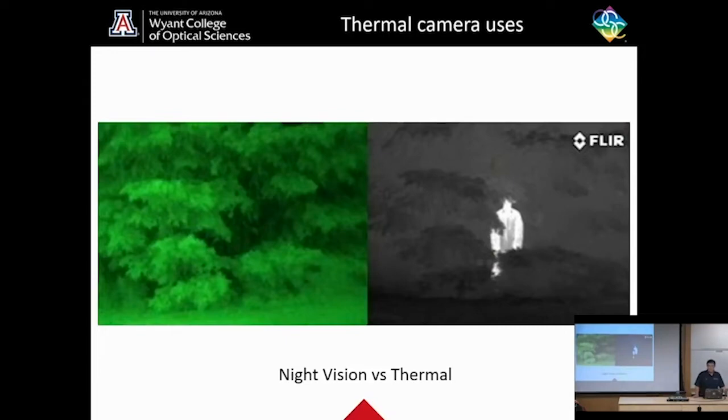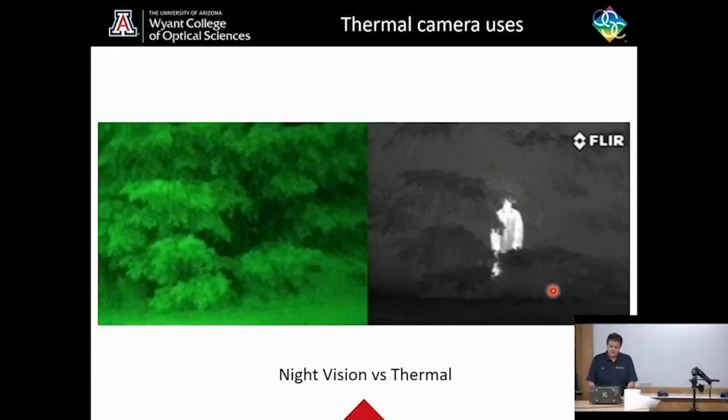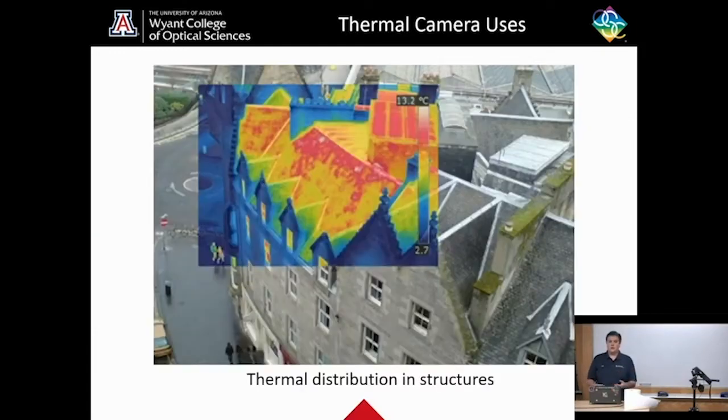Another use, night vision versus thermal. So night vision, you are kind of just upping the contrast. There's usually a green overlay. And you can't really see the human. This is the same scene with a thermal camera. Now the thermal camera is picking up temperature instead of color. And you can actually see the human behind the bushes. This is because the human is much warmer than the surrounding foliage.